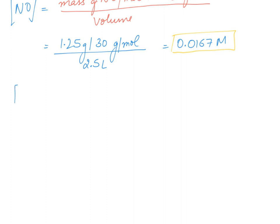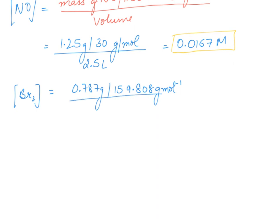Next, to find the concentration of Br2: mass given is 0.787 grams, divided by molar mass 159.808 grams per mole, divided by the volume 2.5 liters. This value comes out to be 0.00197 moles per liter.